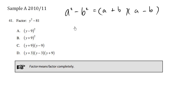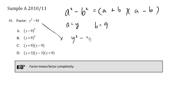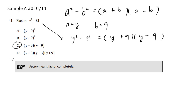Using the same pattern, where a equals y and b equals 9, because 81 is 9 squared — 9 times 9 is 81. So when we factor y squared minus 81, this is going to be y plus 9, times y minus 9. So when we look at the choices, we have C as the correct answer.